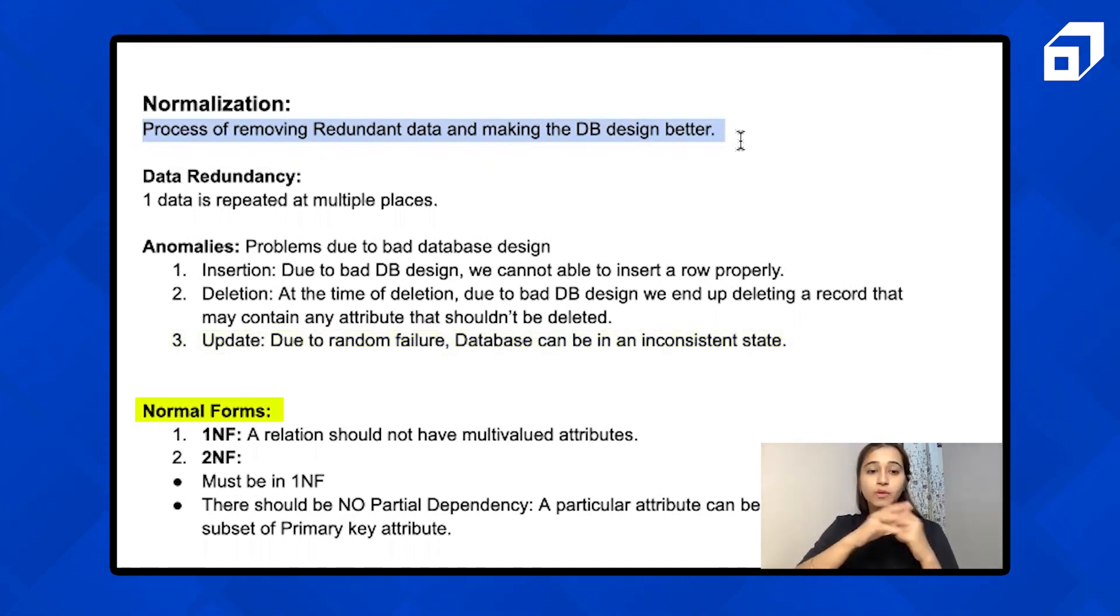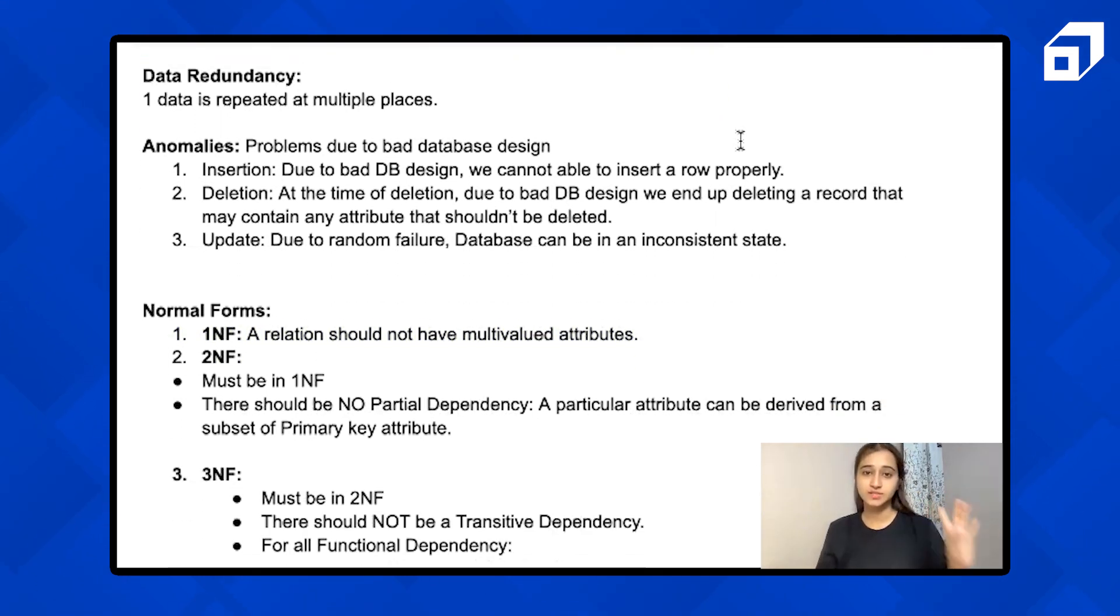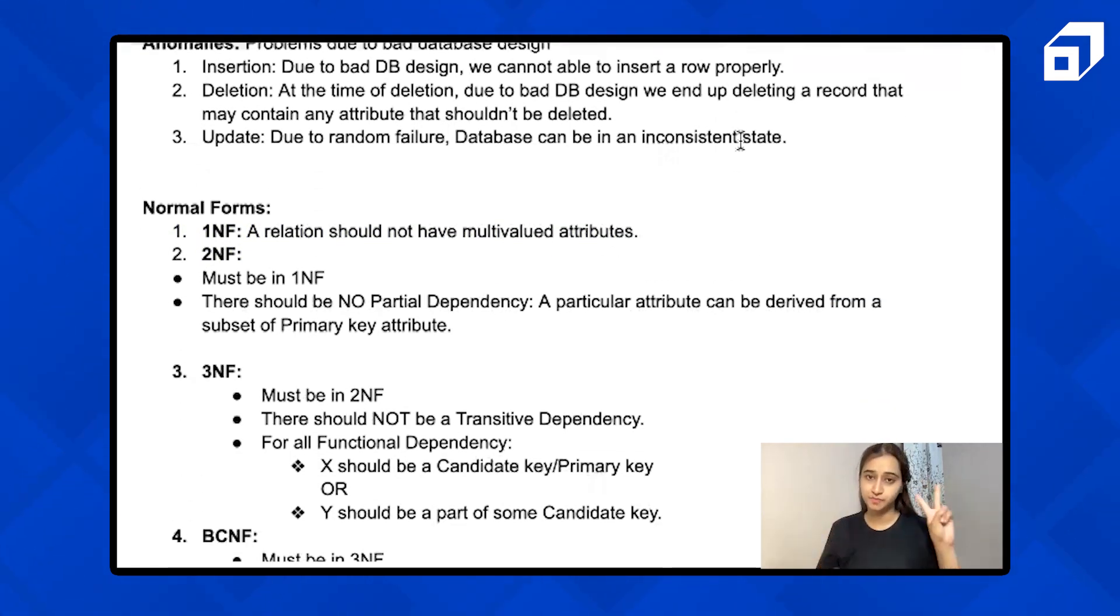Now, normal forms. The very first one is 1NF. A relation should not have multivalued attributes. That's it. Your attribute should be single value. 2NF: First, it follows 1NF. Second, there should be no partial dependency. Partial dependency means a particular attribute can be derived from a subset of primary key attribute. If AB is a primary key, and D is derived from B, this is partial dependency because D is derived from a partial of the key.